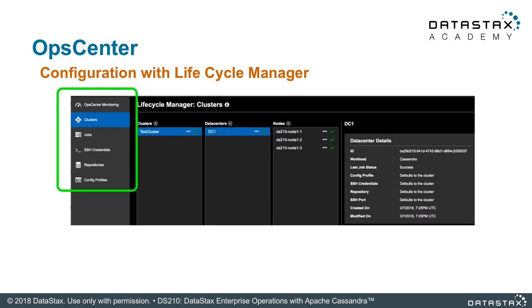On the left, you can see the various settings you can configure with Lifecycle Manager. We show here that we have selected the Clusters option, which allows you to create clusters, data centers, and nodes. You can see that we are using Lifecycle Manager to manage a single cluster with a single data center of three nodes, but you can manage many of each. The green check mark means the cluster, data centers, and nodes are all successfully installed. The pane on the right shows the details of the data center, and you can also click on the cluster or any of the nodes to see their details. To add a cluster, data center, or node, you click on the little plus sign and fill out the forms.